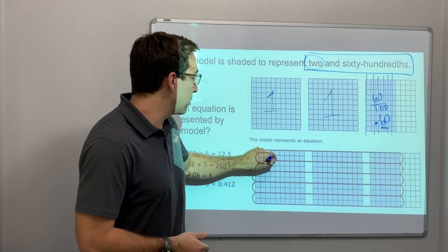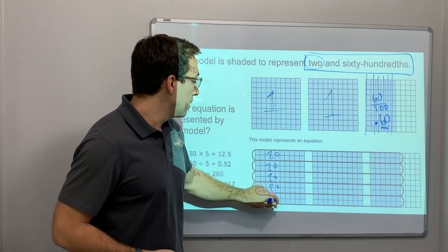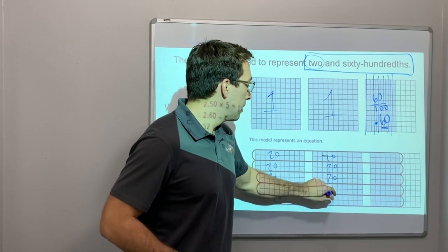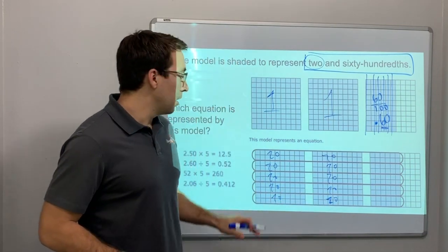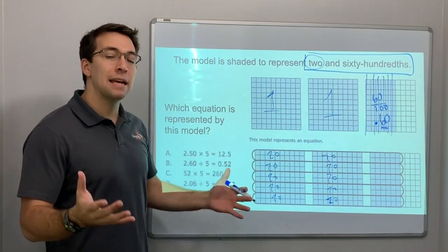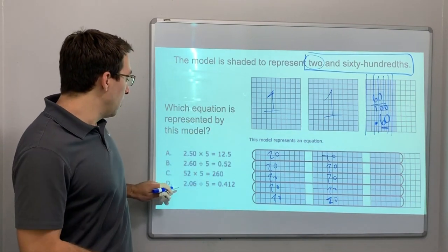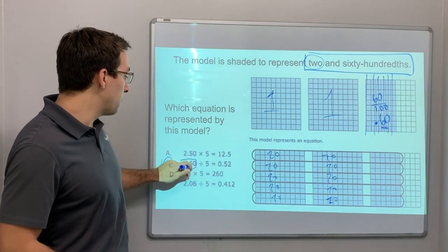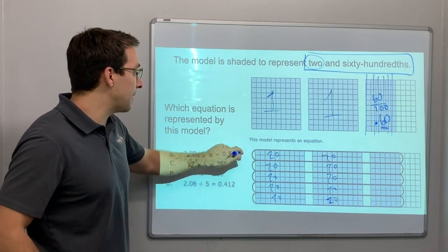So this is 20 squares, 20 squares, 20, 20, 20. These are all identical. 20, 20. So we know that it's even. So it's a division problem. 2 and 60 hundredths, 2.6. So that's easy. We got that divided by 5.